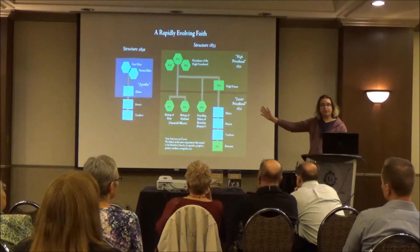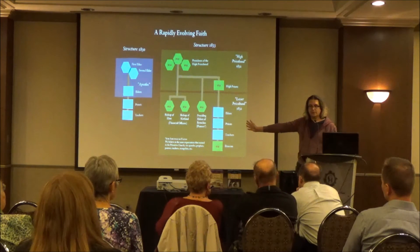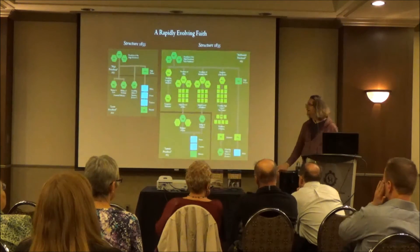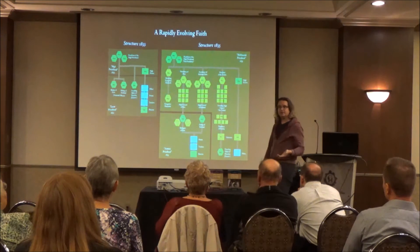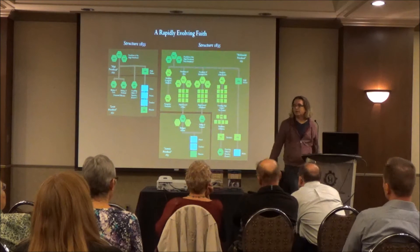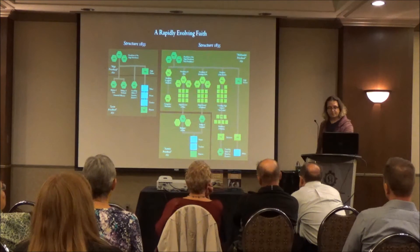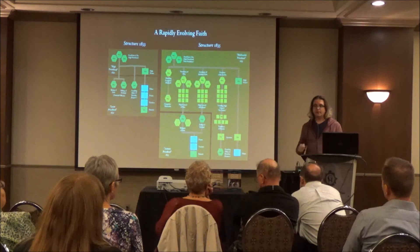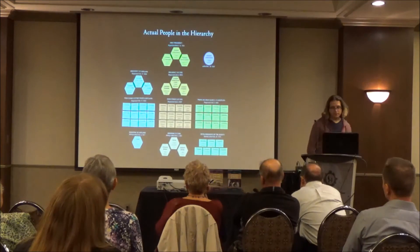Fast forward two more years and you can see an explosion of different ideas and restored offices. We now definitely have high priests as an office, 70s, presidents of 70, a traveling high council of 12 with a president, a high council of Zion, a high council of Kirtland, evangelists, presiding evangelists, and the first presidency. If you were one of the Whitmers who signed up in 1830, you could be forgiven for having whiplash when you wake up in 1835 and see what this church looks like.